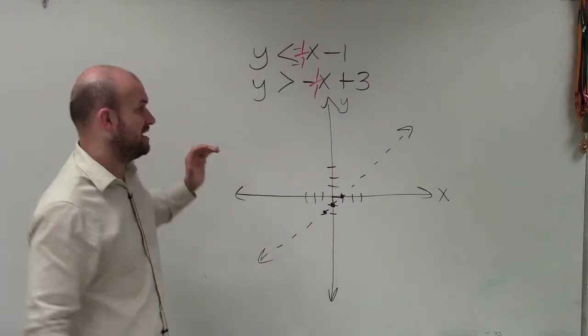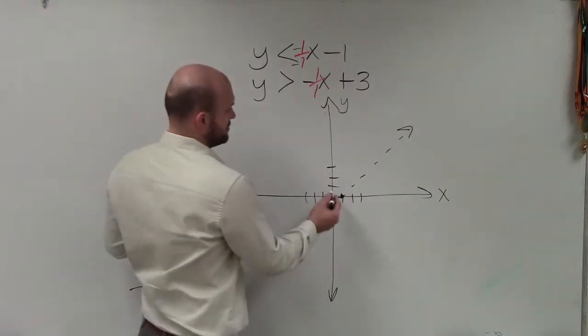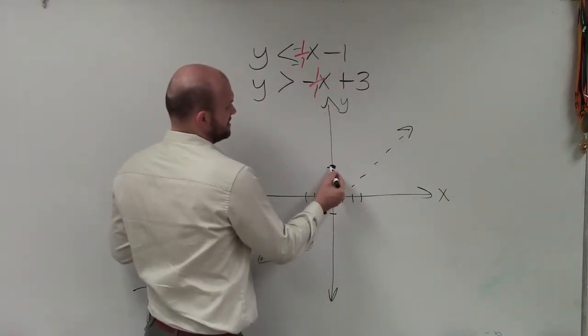I'm going to do the shading at the end once I've graphed both equations. Now, to go on this one, this one has a y-intercept of positive 3. So I go up to 3, 1, 2, 3, make a nice big dot.